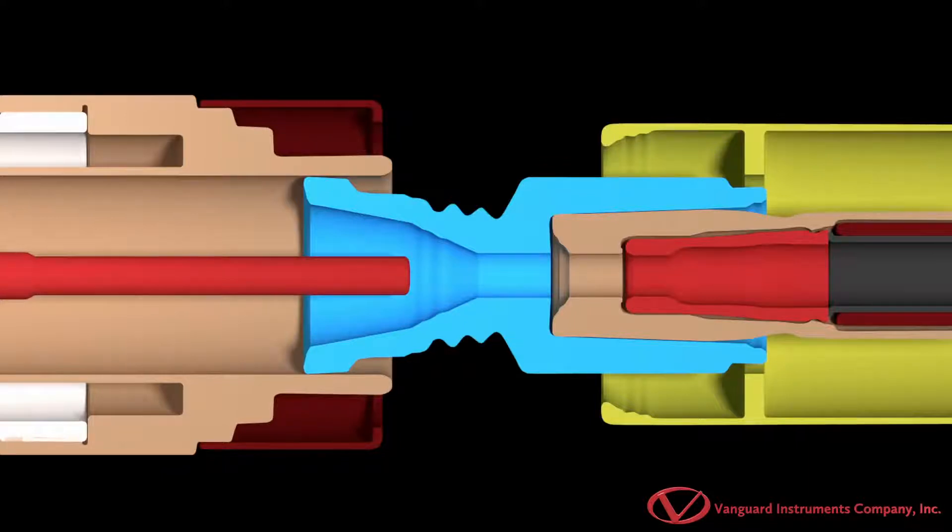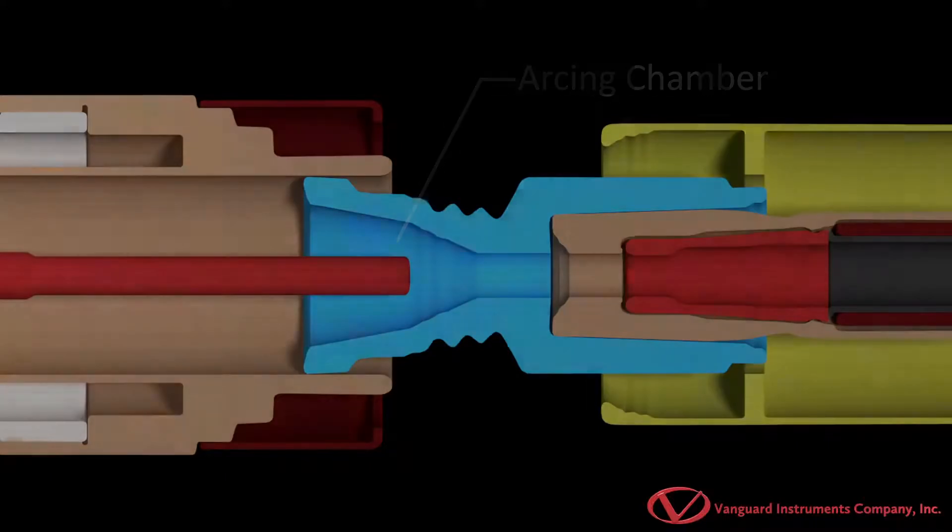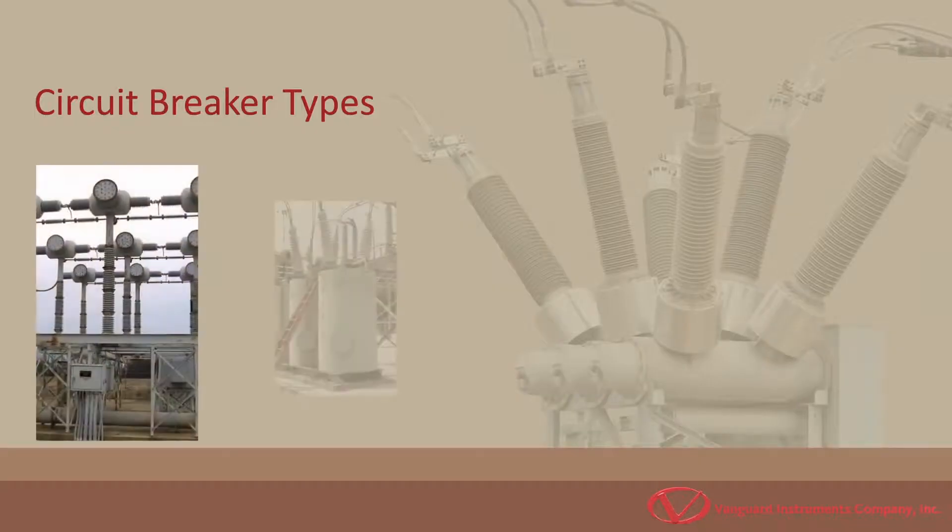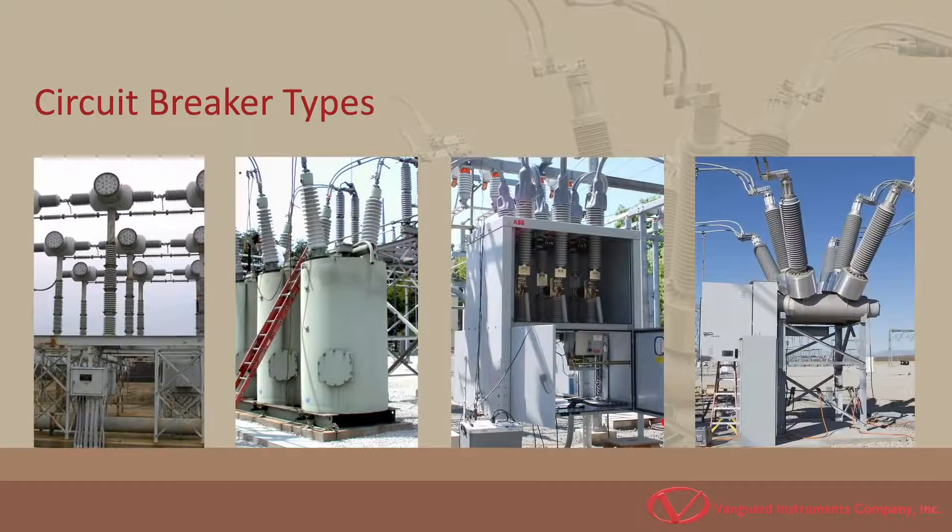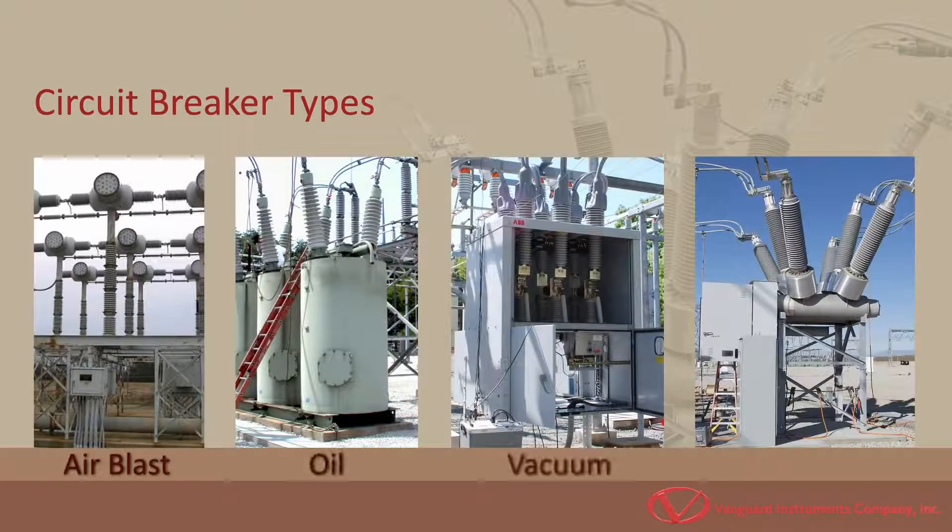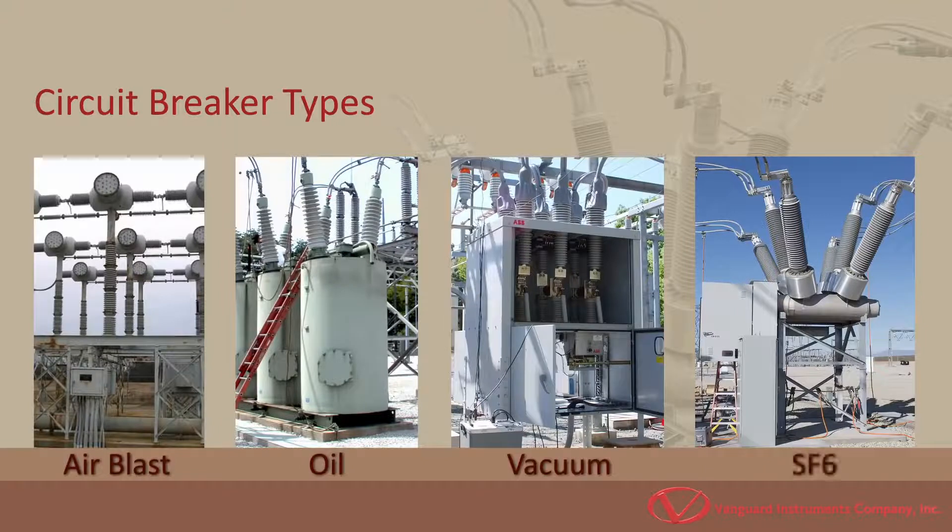Circuit breakers commonly feature an arcing chamber where the arc is intensively cooled by insulating media. Breakers are classified based on the insulating media used for arc suppression. The main four breaker types are air blast, oil, vacuum and sulfur hexafluoride.